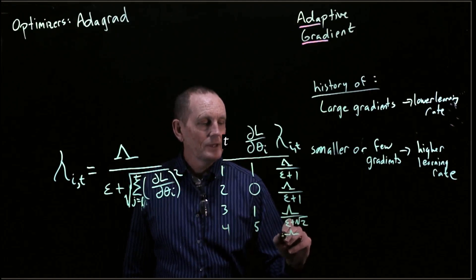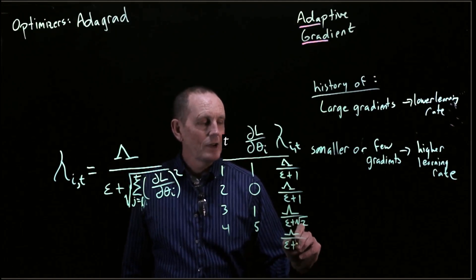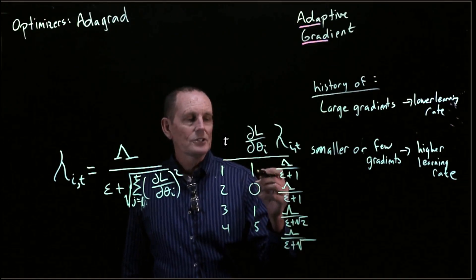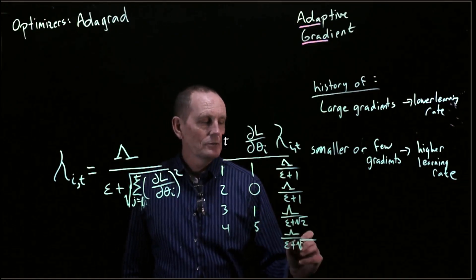then lambda over epsilon plus the square root of 1 squared, 1 squared, 5 squared, so 27.